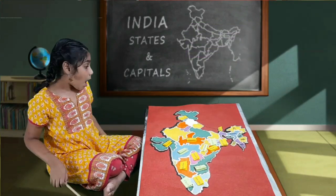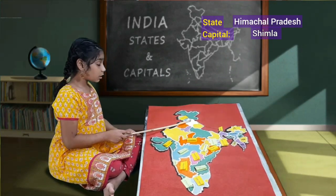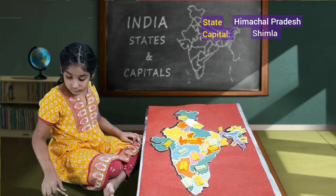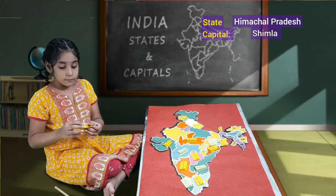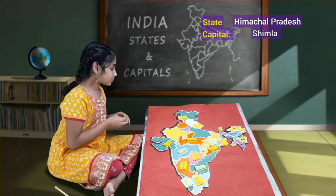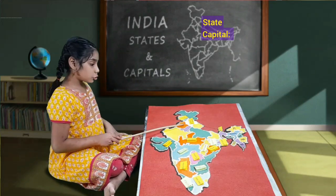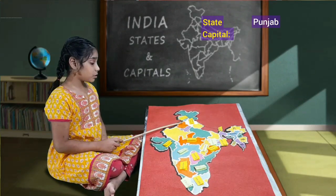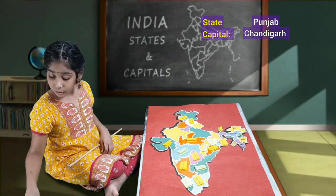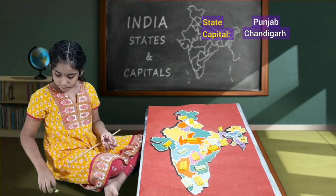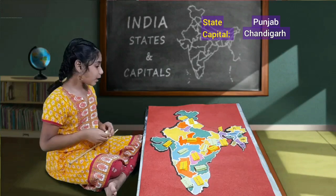After Jammu and Kashmir, we'll have Himachal Pradesh. Himachal Pradesh's capital is Shimla. This is Himachal Pradesh. If we open the chart, we'll have Shimla. Now we'll go to Punjab. Punjab's capital is Chandigarh. This is Punjab. If you open this, we'll have Chandigarh as capital.